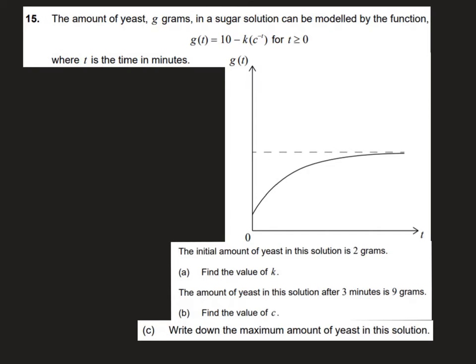To finish off the paper, we have a question on modeling a function involving the amount of yeast. G represents the amount of yeast in grams and is a function contingent on a few variables. We've got g(t) = 10 - k·c^(-t) for t ≥ 0, where t is the time in minutes and k and c are constants. The initial amount of yeast in the solution is 2 grams, and we are asked to find the value of k.